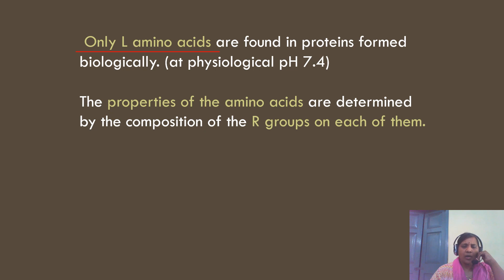The properties of amino acids are dependent on their side chains. The properties of each amino acid are determined by the composition or the R group present on each of them, because the R group is the one that differs among amino acids.